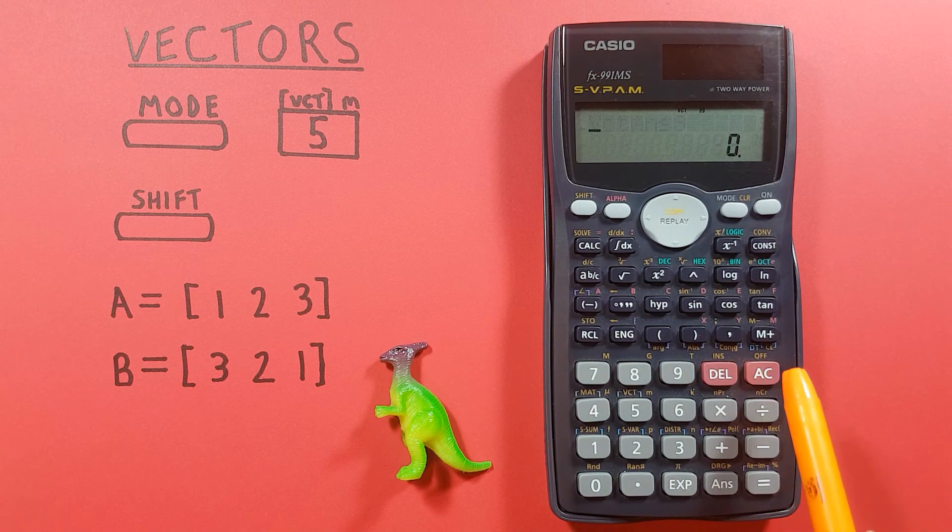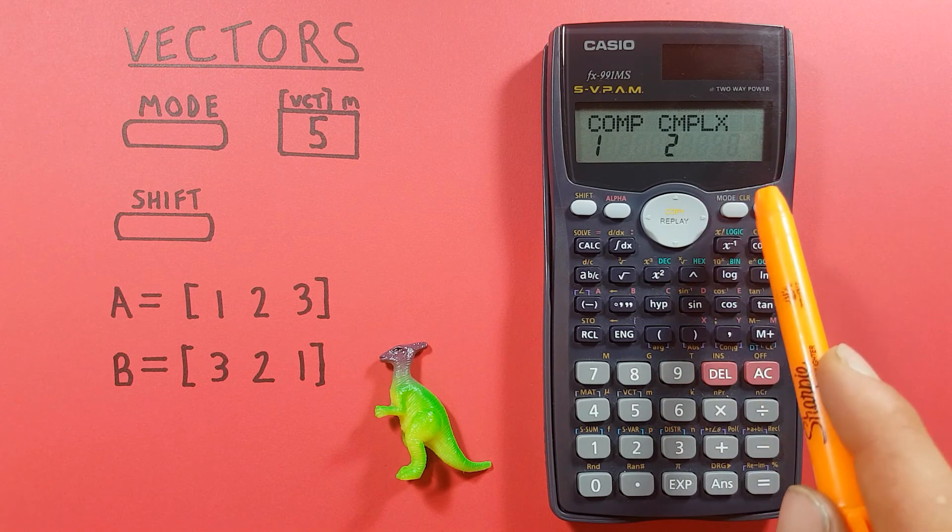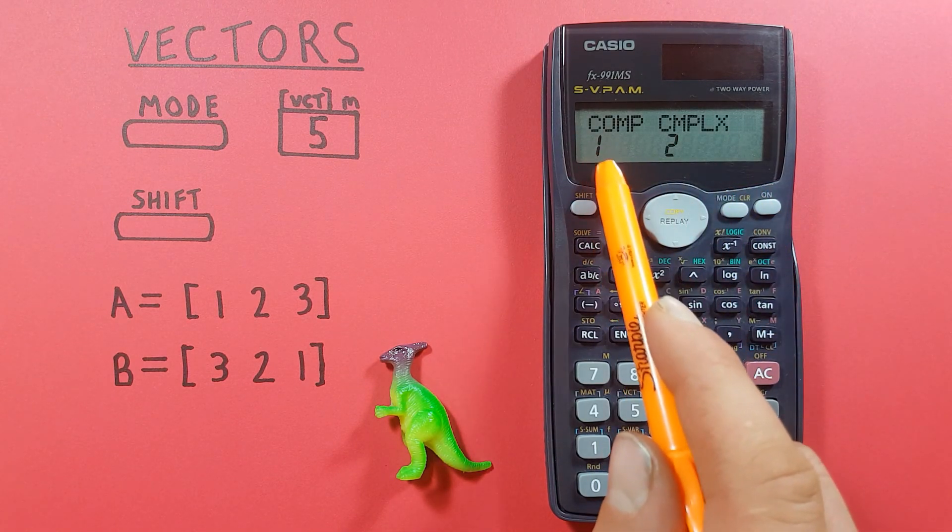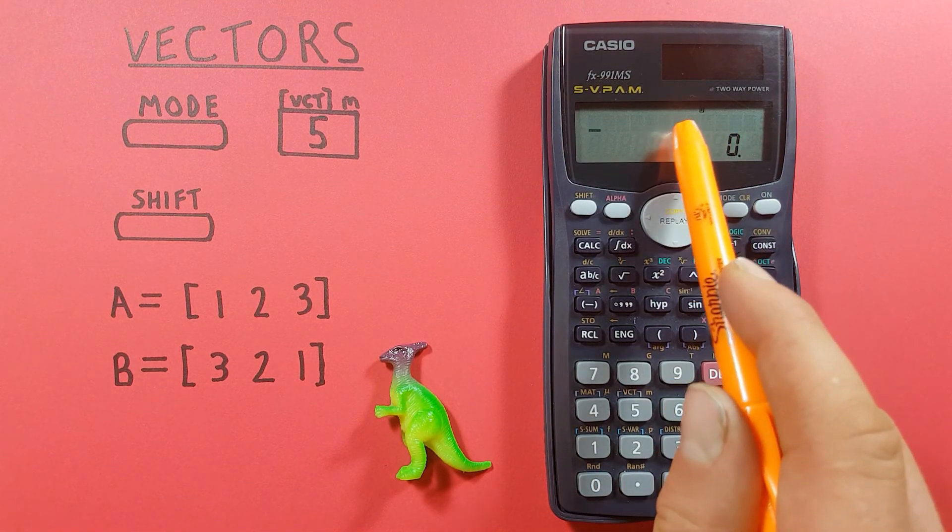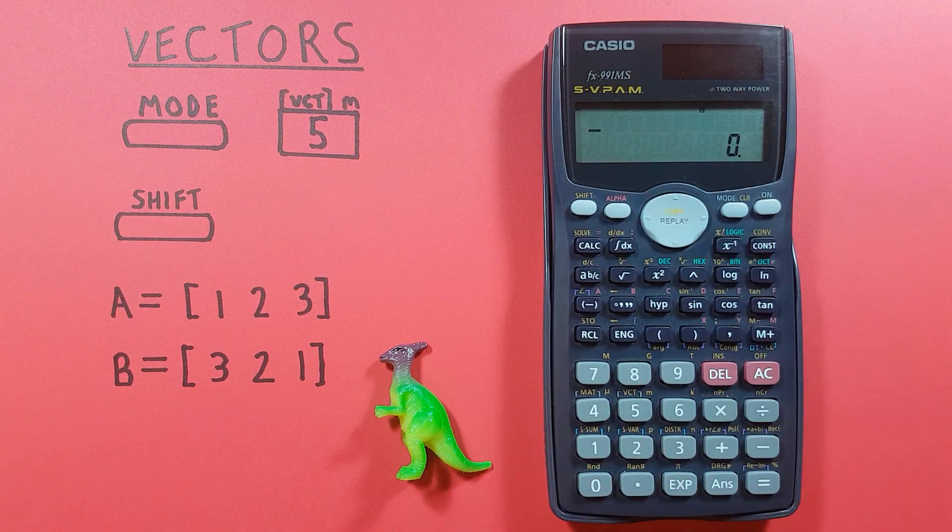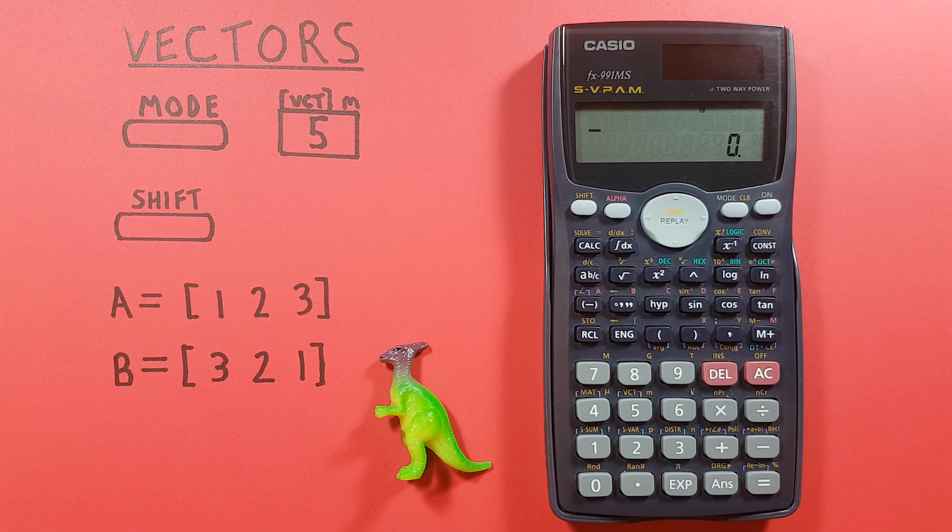Once you're done you can clear the screen and go back to your normal mode by pressing the mode button and choosing number 1 there on their first menu. You see the VCT at the top of the screen is gone now and you're back to your normal calculator mode. All right, I hope this helps and good luck on those tests out there everybody.